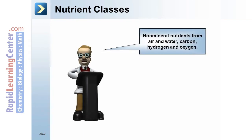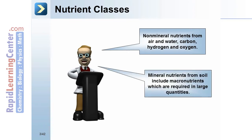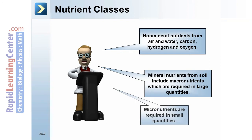Nutrient classes. Non-mineral nutrients come from air and water: carbon, hydrogen, and oxygen. Mineral nutrients from soil include macronutrients, which are required in large quantities, and micronutrients, which are required in small quantities.